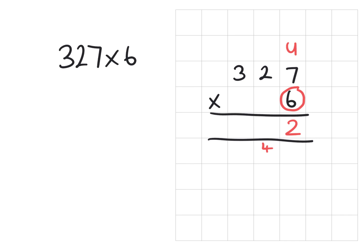Then 6 times the 20 here. So 6 times 2 because we're already in the tens column is 12 plus the 4. Good idea to circle it to say you've used it is 16.